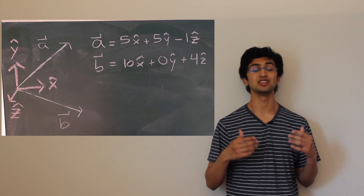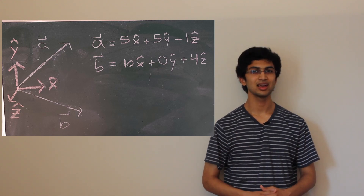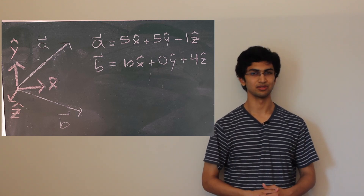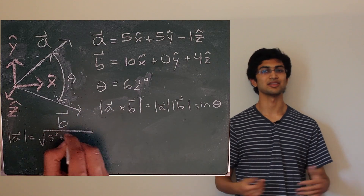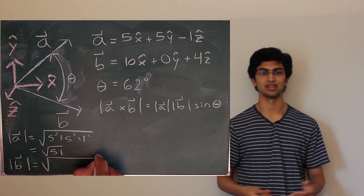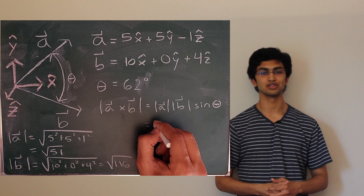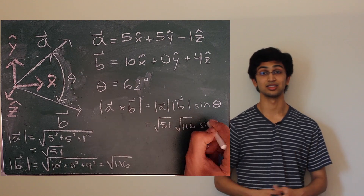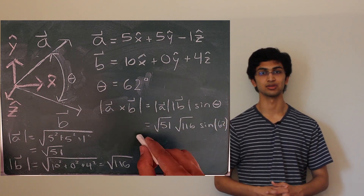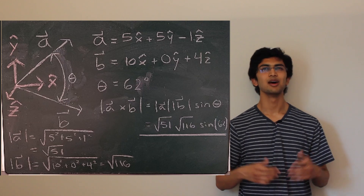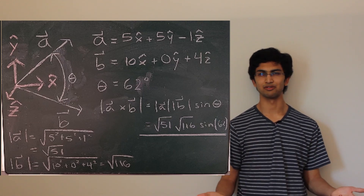If I asked you to determine the cross product of two vectors in arbitrary directions, could you do it with what we've learned so far? What if I gave you these two vectors and asked you to determine their cross product? How would you determine the resultant vector? You could take the magnitude of these two vectors and the angle in between them and use the formula AB sine theta to determine the magnitude of the resultant vector of the cross product, but how would you get the resultant vector's direction?